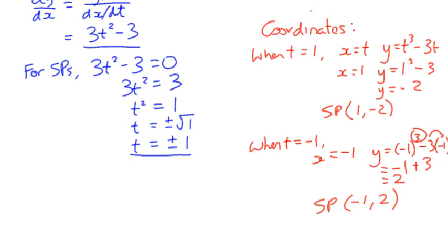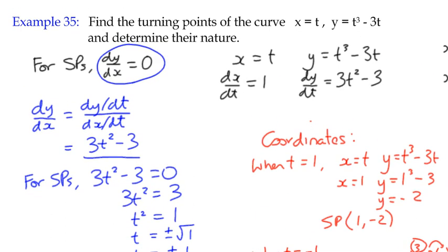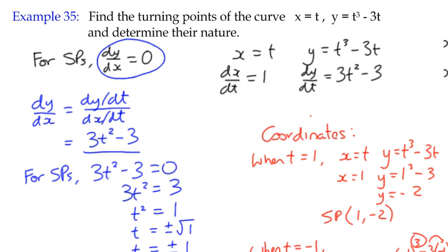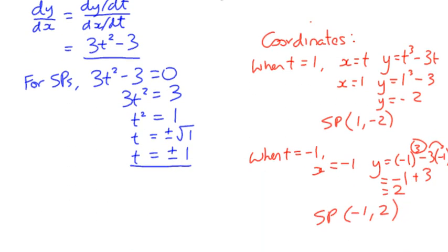So two stationary points. It doesn't ask us just to find the stationary points in the equation. If we go back, it says find the turning points of the curve, which we've just done, and determine their nature.